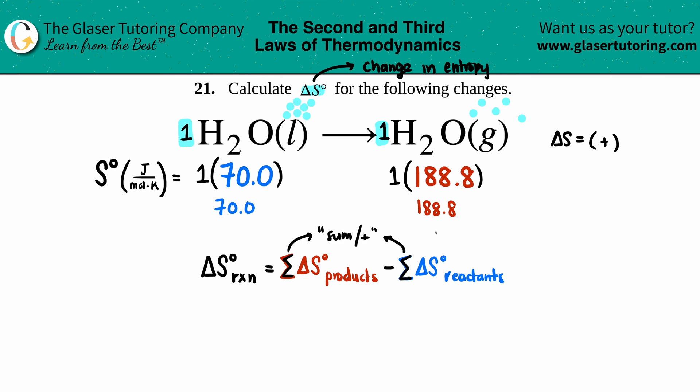And you only had one product and one reactant, so that's the total for each side. Now we're just going to include these into our equation, and it's always products minus reactants. So let's go for it.